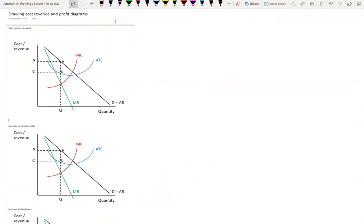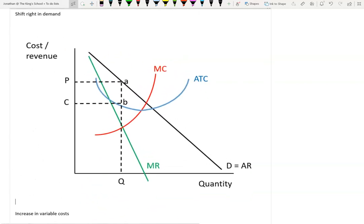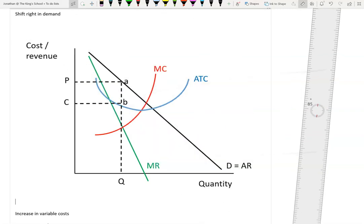Today we're going to talk about an absolutely crucial diagram: how to shift demand, D equals AR, MR curves, and MC and ATC curves on a cost, revenue, and profit diagram. This is so useful, you will do it in the exam. It comes up regularly in paper 3, and if you can do it, you can prove to the examiner you can do something quite complex.